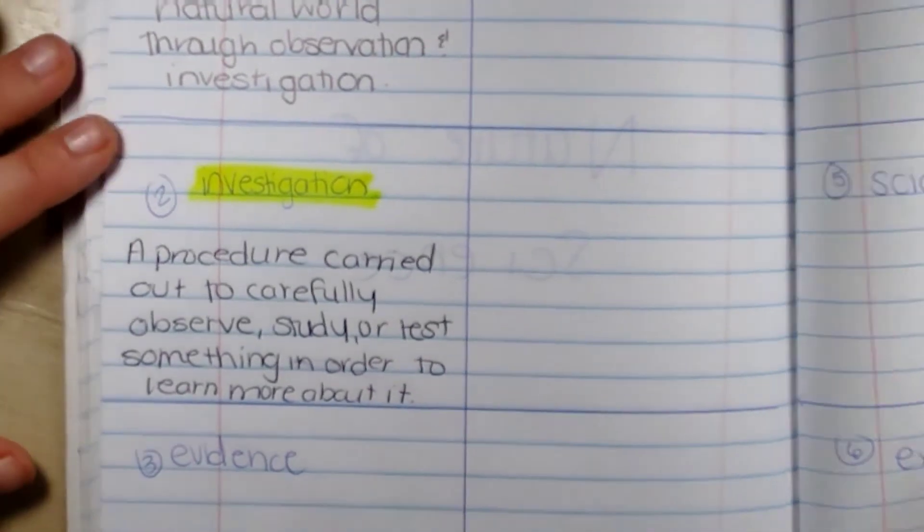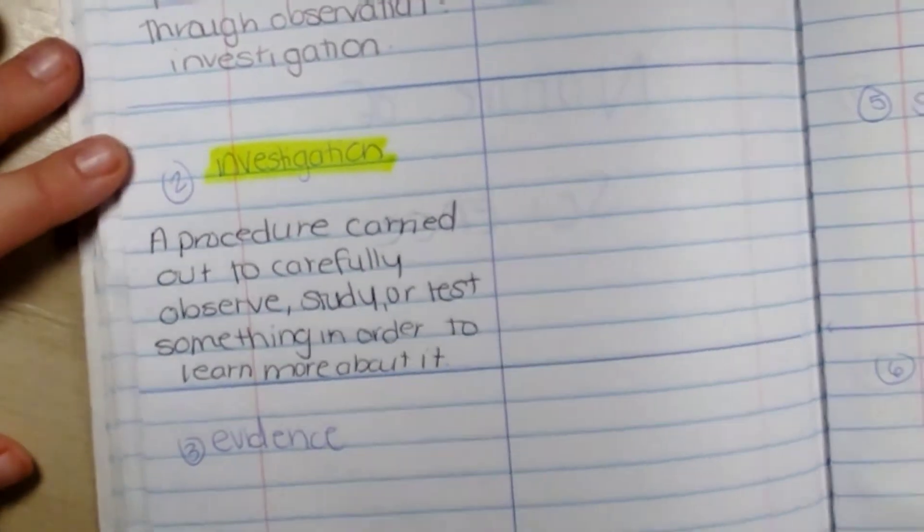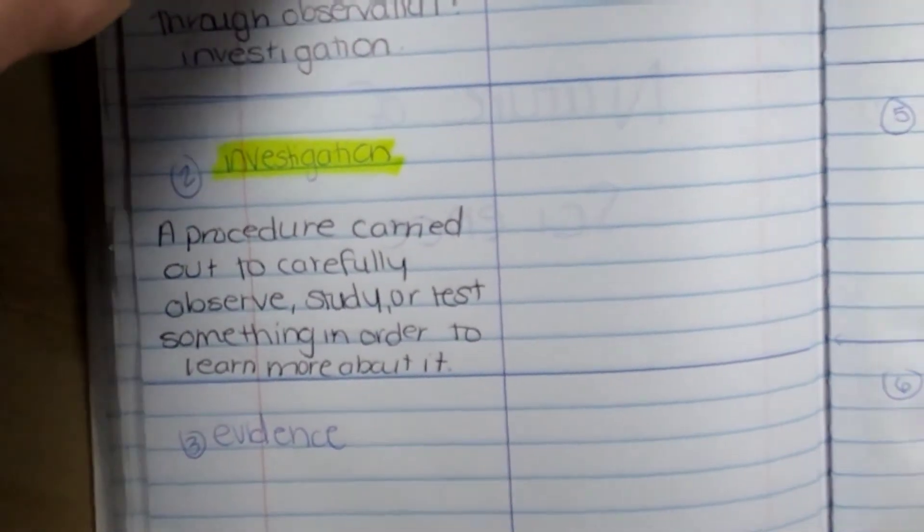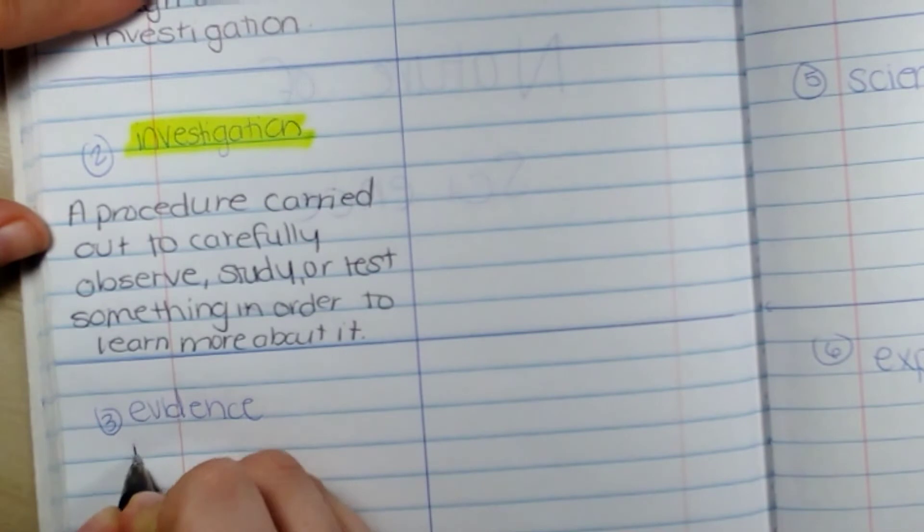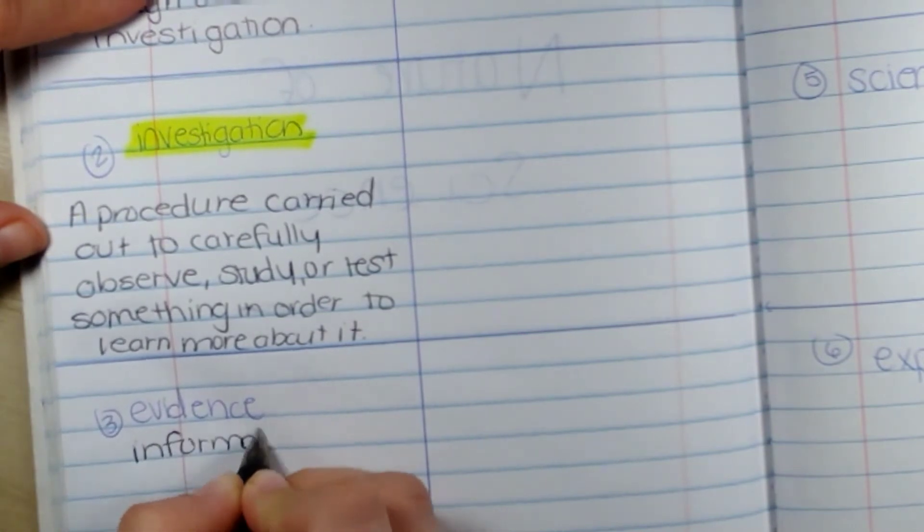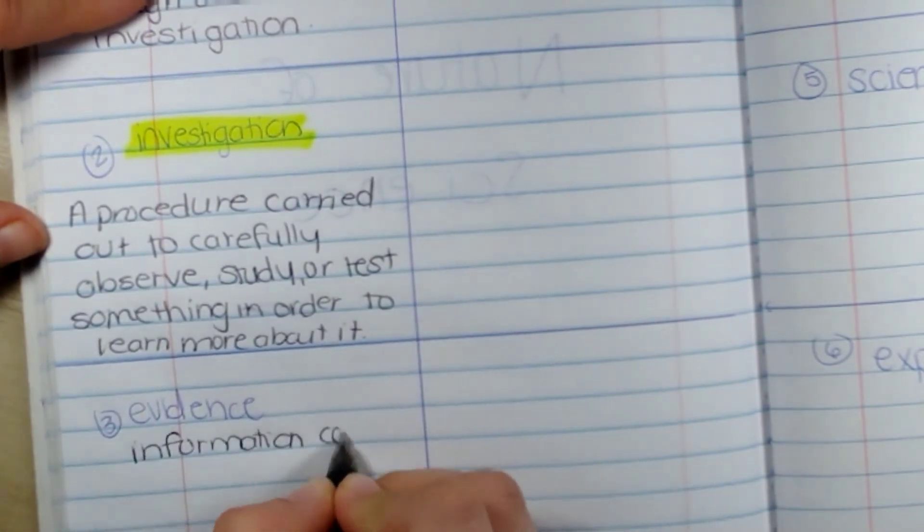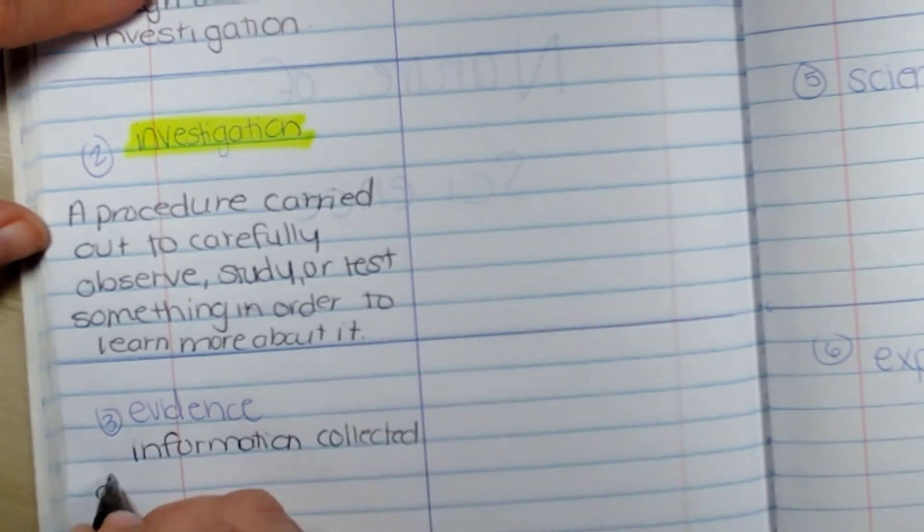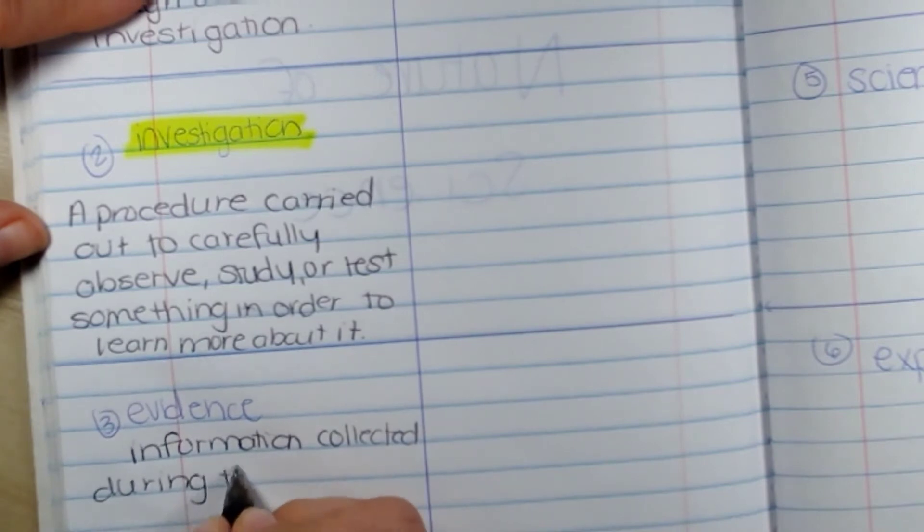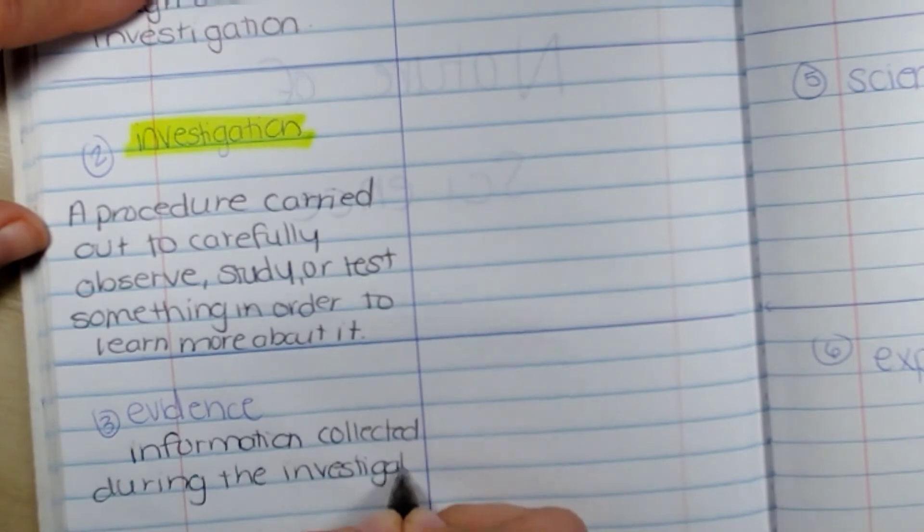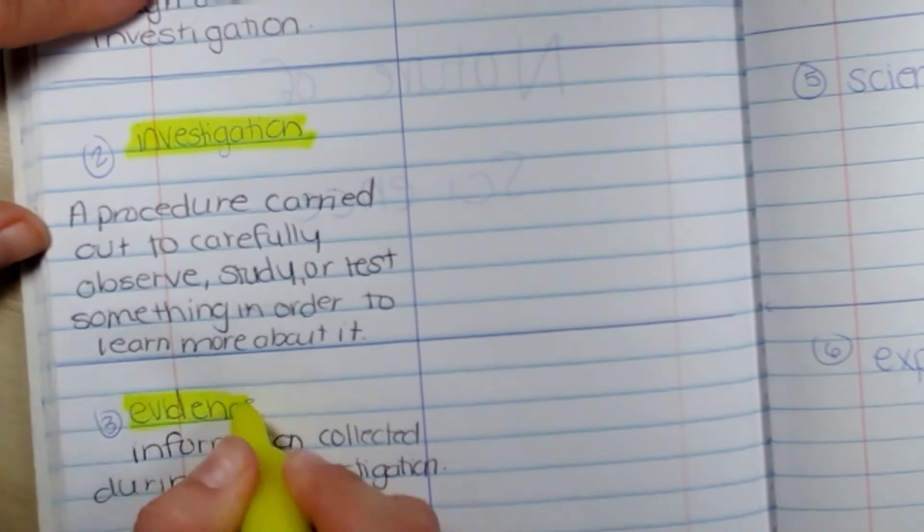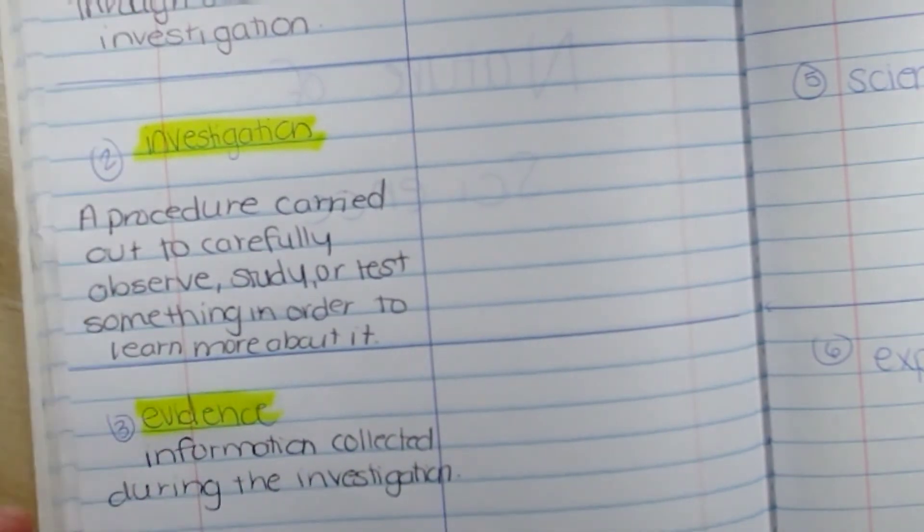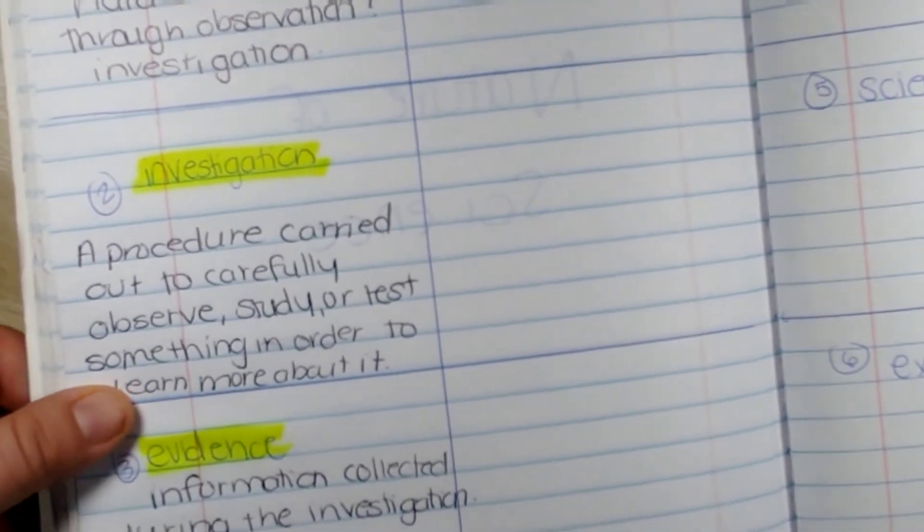Now the next word is evidence. Evidence is information collected during your investigation. Evidence. You're always looking for evidence in science to prove why you're right or wrong. So pause it, catch up, and then move on to the word opinion with us.